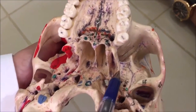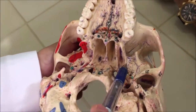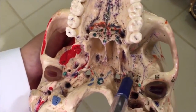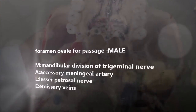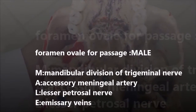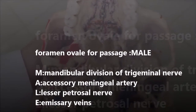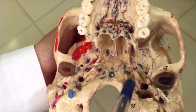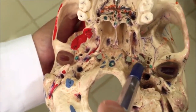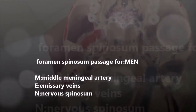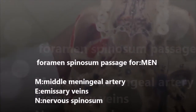Posterior and lateral to the lateral pterygoid plate of the sphenoid, we have the foramen ovale, which is for passage of the mandibular nerve, accessory meningeal artery, lesser petrosal nerve, and emissary vein — memorized as MALE. Posterior and lateral to the foramen ovale, we have the foramen spinosum, for passage of the middle meningeal artery, emissary vein, and nervus spinosus — memorized as MAN.